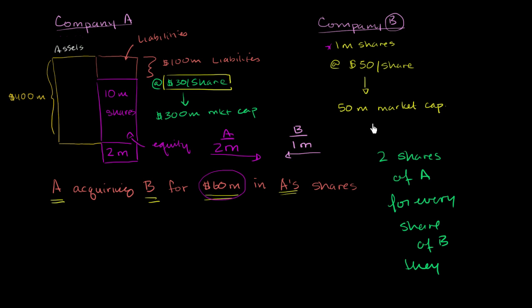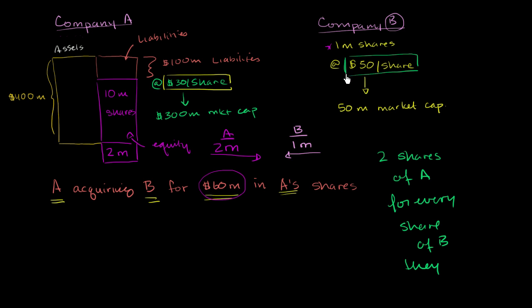And that makes sense economically, because right now on the market Company B is trading at $50 a share, giving it a $50 million market cap. By offering $60 million in shares, they're offering a premium. This is what will convince shareholders to say: this is a pretty good deal — I'm getting 20% above the market price. When you get 2 shares of A in exchange for your one $50 share, you're getting 2 shares trading at $30 each. So you can exchange something worth $50 for something worth $60. I'm going to take it.